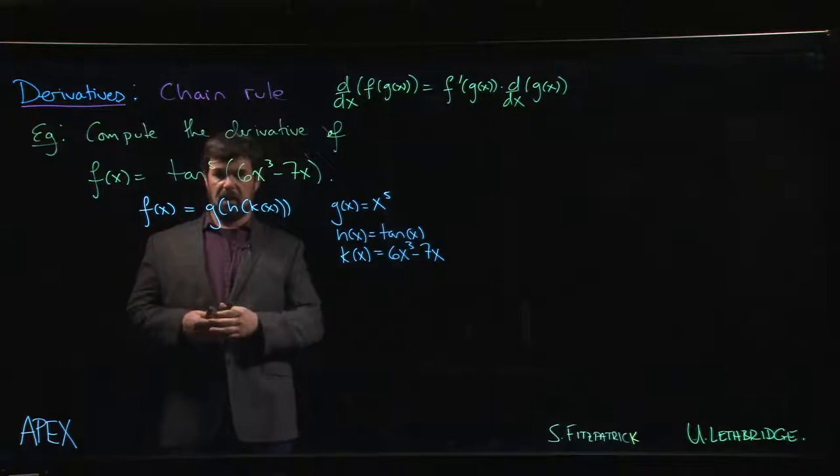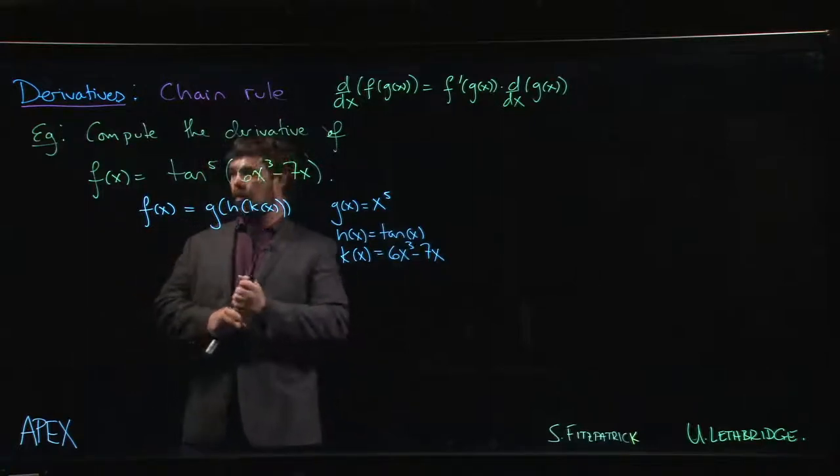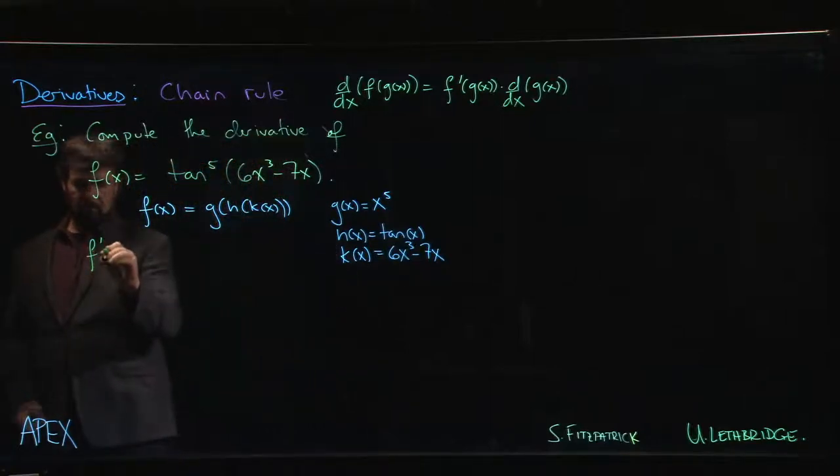It's kind of like peeling an onion. So if we want to calculate f prime of x, we're looking at the derivative of—let's write that fifth power on the outside just to make things easier to see.